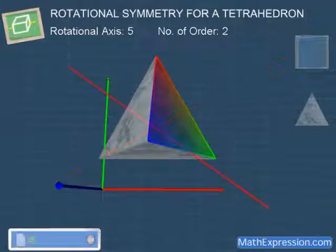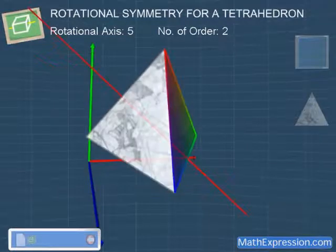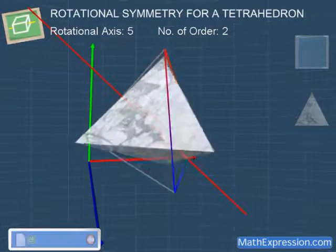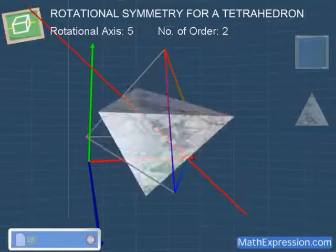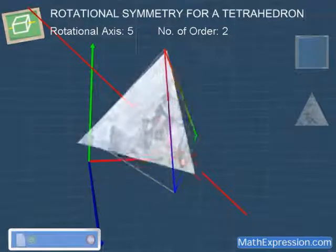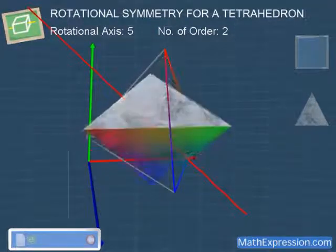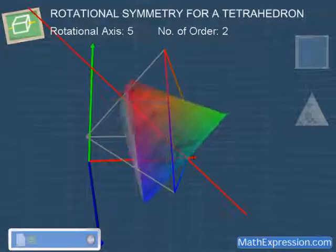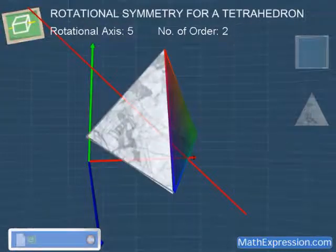For the fifth axis, this axis has order of 1, 2.